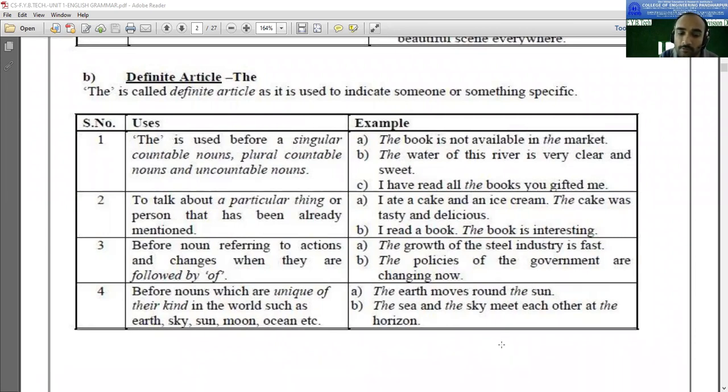Sky is also one of its kind. Sky is also unique. Sun, sun is also unique. Then moon is also unique. Someone, please mute yourself. There's disturbance. Before the nouns which are unique of their kind in the world such as earth, sky, sun, moon, ocean, etc., before these nouns we use 'the' as an article.